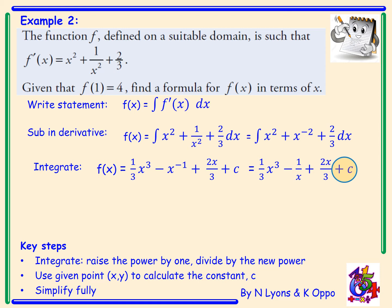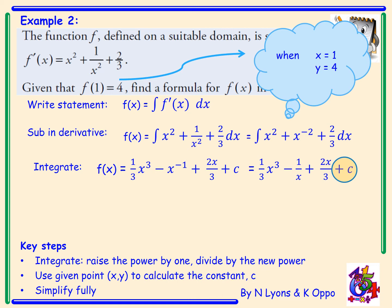What they're really saying is when x is 1, y is 4, or f(x) equals 4. So I sub those values in: 4 equals a third times 1 cubed minus 1 over 1 plus 2 thirds plus c.